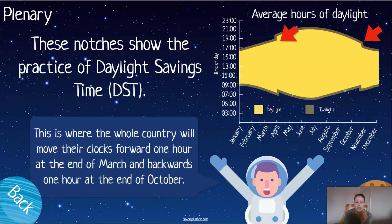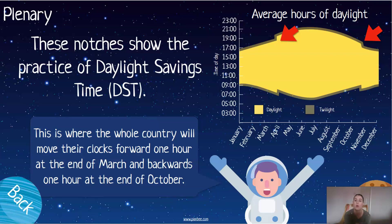Well done if you spotted it — these notches show what we call daylight saving time. This is where at two points in the year you're told to either move your clocks forward an hour or move them backward an hour. In October, when we hit winter, we move our clocks one hour backwards, making days shorter and nights longer. Then in March, when we approach summer, we move clocks one hour forward — and that's how we get that gap, making up for those additional 0.5 days.